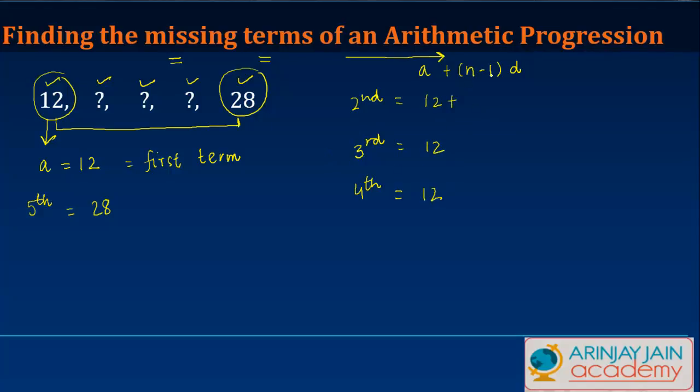Now what is n? n refers to the number of term. So if this is equal to 2 minus 1, if it is the third term instead of n we put in 3 minus 1, for the fourth term we put in 4 minus 1, but what we don't know is the value of this difference.